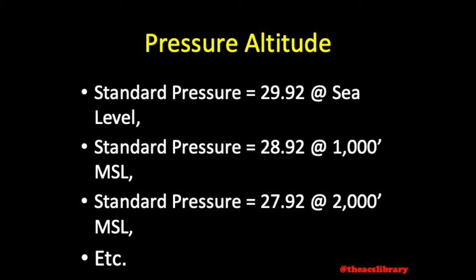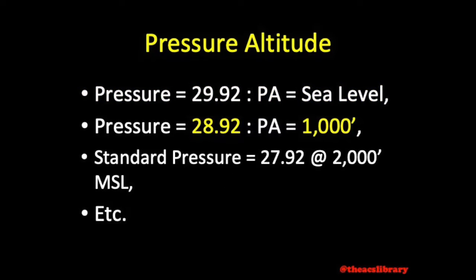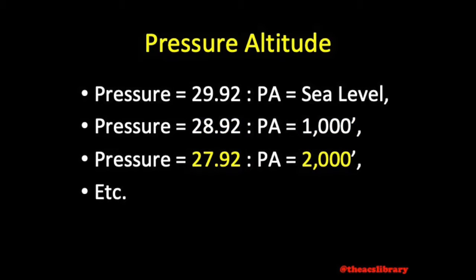Finding pressure altitude is as simple as finding the expected pressure based on standard atmosphere. If we expect to find a pressure of 29.92 inches of mercury at sea level, then based on a pressure of 29.92 our pressure altitude would be 0 feet. At 28.92 we have a pressure altitude of 1,000 feet; 27.92 is 2,000 feet pressure altitude, and so on.